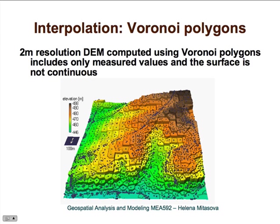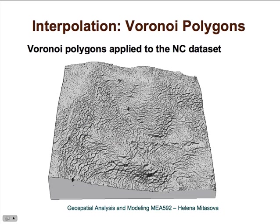This is how the result looks. The blue points are the measured points, and you can see there is a unique nearest neighborhood around each point. Within that neighborhood, all grid cells have the same value as the given point. Here is another example from a denser set of points that you will use for your assignment. It looks a little bit more continuous, but you can still see jumps and discontinuities based on the values at the measured points.